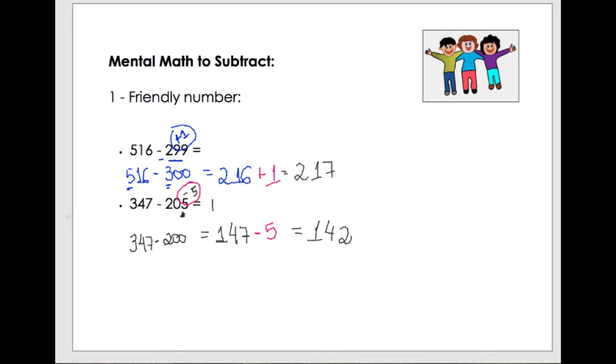So, here, to make a friendly number, remember friendly number, it's when the number becomes easier to do the operation, can be addition or subtraction. Here, I add plus 1 to make the 300, to make this easier to subtract. Here, instead of adding, I took away 5. So, this strategy, it's called friendly number. There's one more strategy here that I will show. Just one minute, it's here.